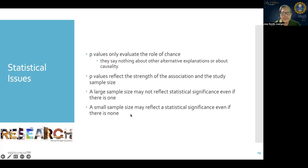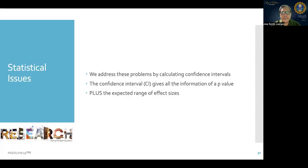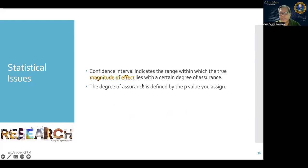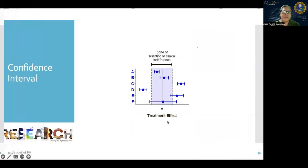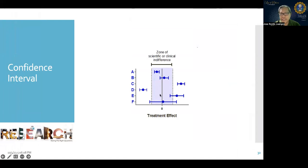To counteract the issue of sample size affecting p-values, we calculate the confidence interval. The confidence interval gives all the information of a p-value plus the expected range of effect sizes. It indicates the range within which the true magnitude of effect lies with a certain degree of assurance. If the range crosses the line of reference, there is no statistically significant difference; if it does not cross the line of reference, there is a statistically significant difference.